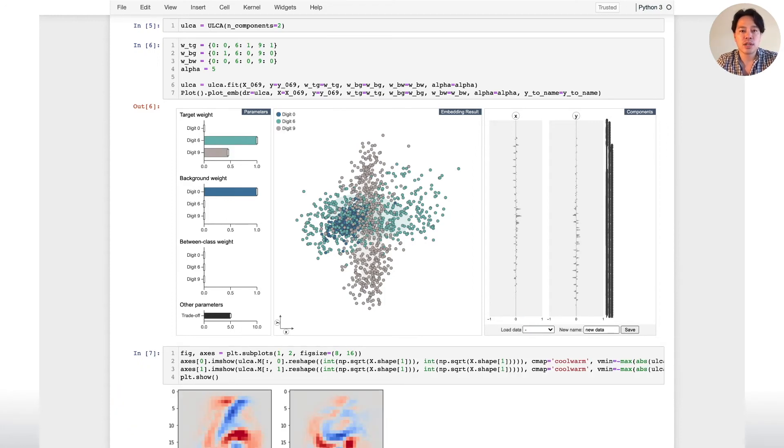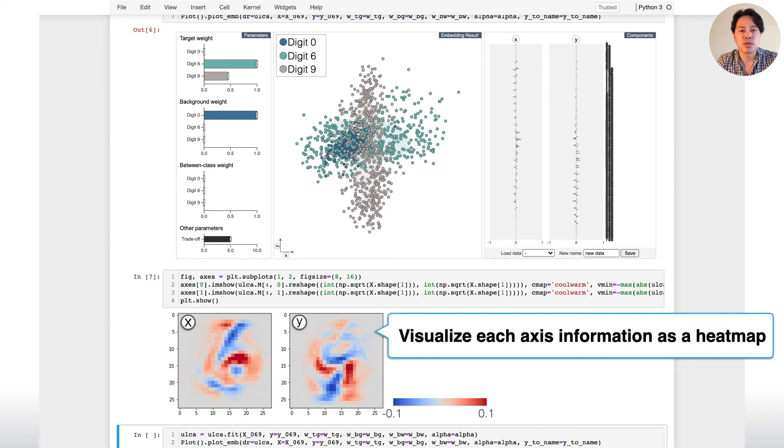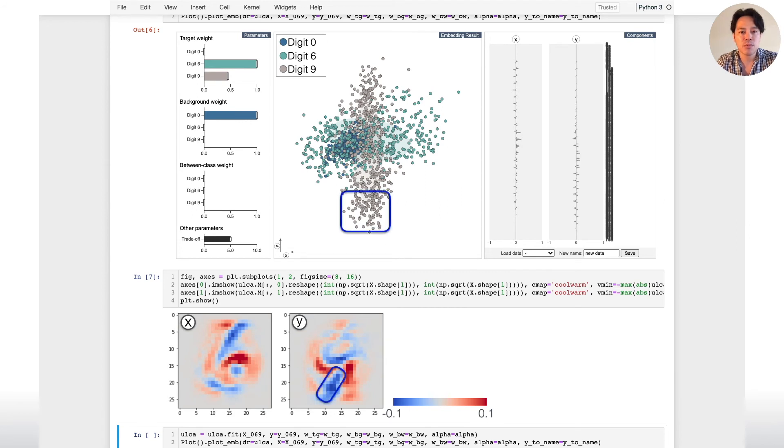Thus, we use an existing library to visualize the axis information with heat maps. Here, pixels close to dark red and blue have strong influence on positive and negative directions of each axis, respectively.